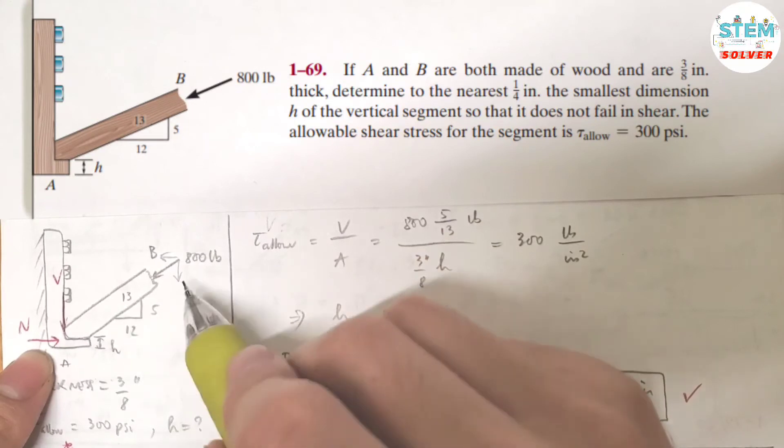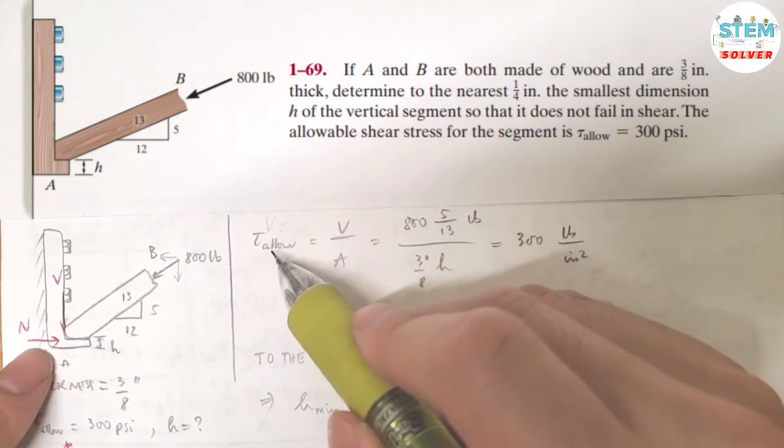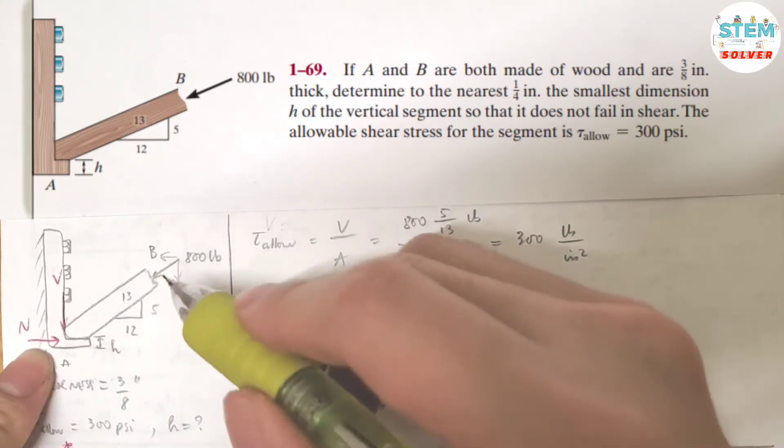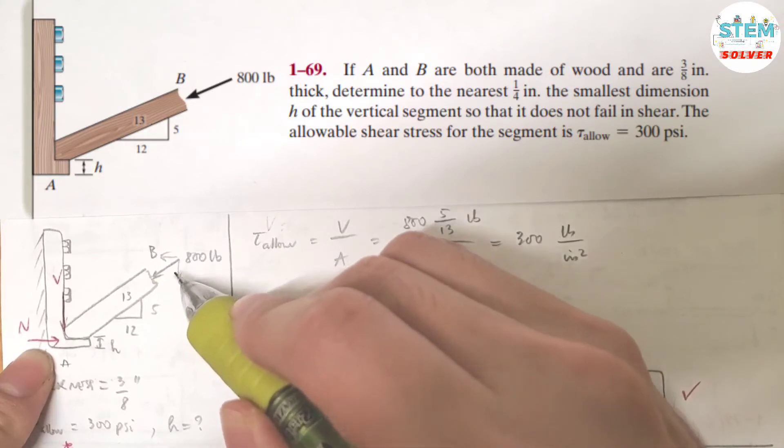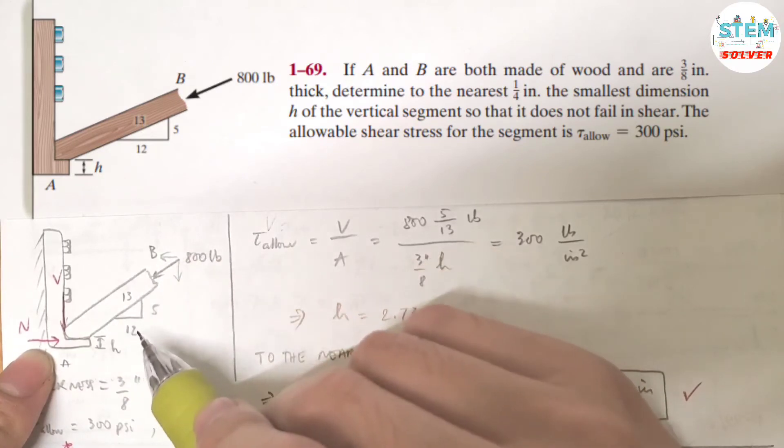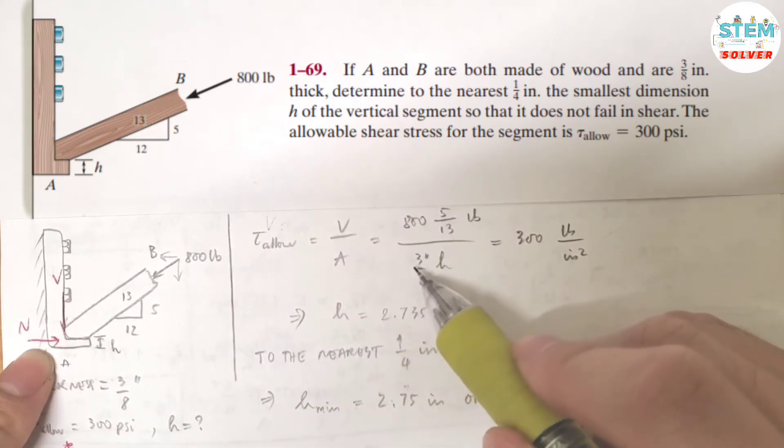So you need to find the shear force. The allowable shear stress is equal to the shear force divided by the area. What is the shear force? The shear force is this one. So you know the ratio is 5 over 13 times the force of 800 pounds. That is your shear force.